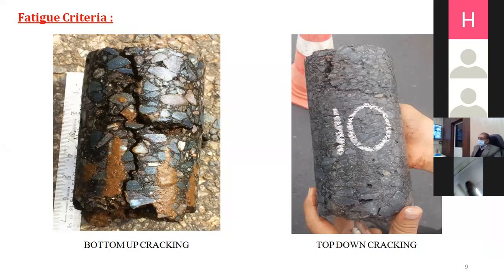The FWD is similar to the Benkelman Beam in that we note down deflections, but the difference is the type of loading applied. There are separate IRC codes for each. From the deflections we get modulus values, and from the modulus values we find the remaining life of the pavement, and finally design the overlay.